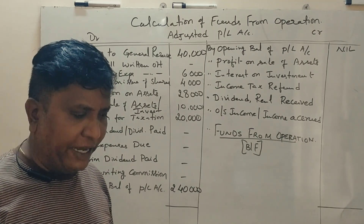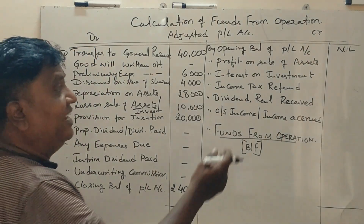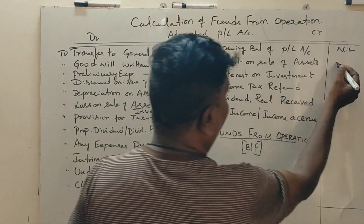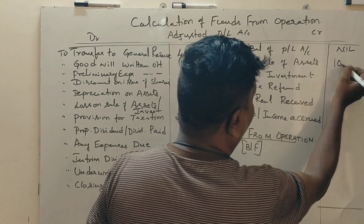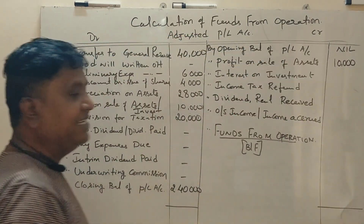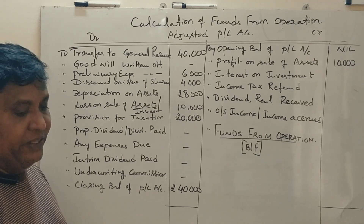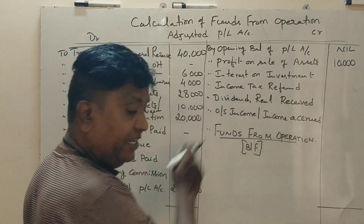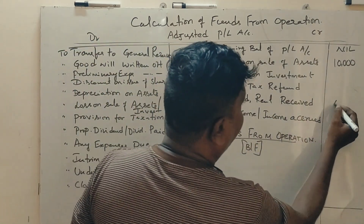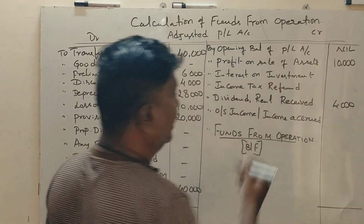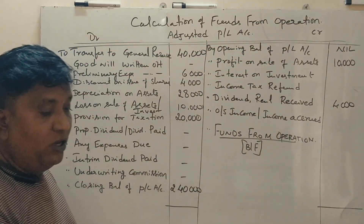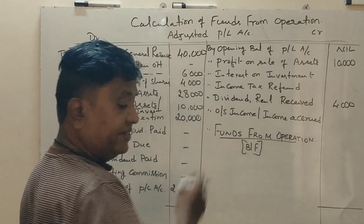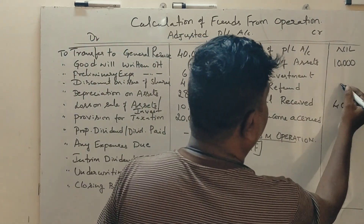Profit on sale of asset — 10,000 rupees. Dividend received, rent received — credit side. Refund of tax — 6,000 rupees.